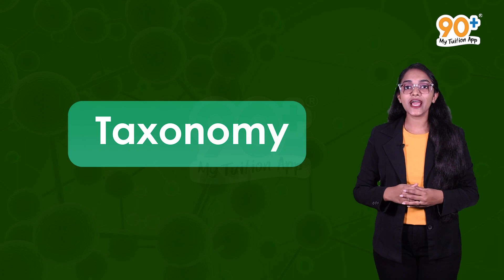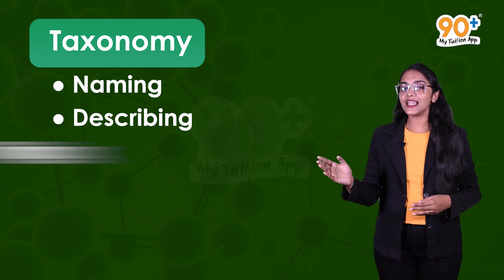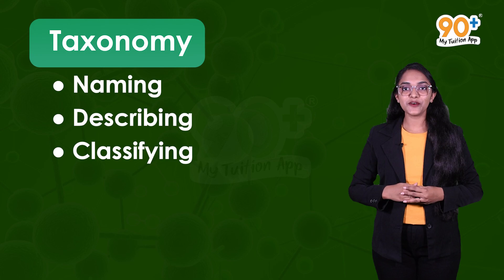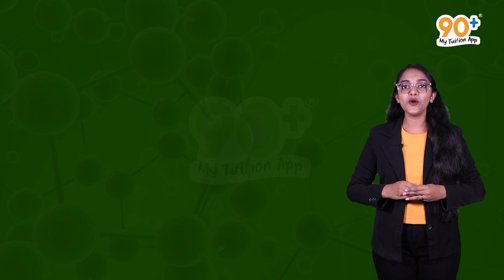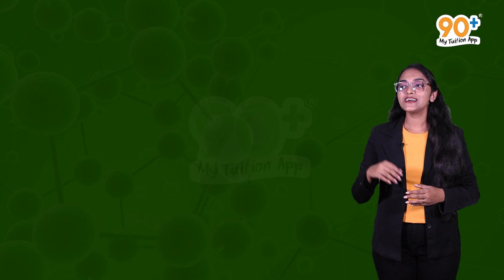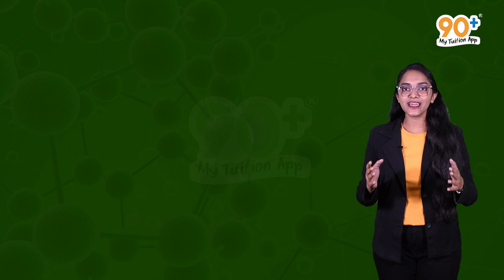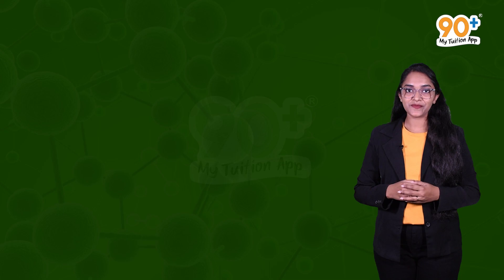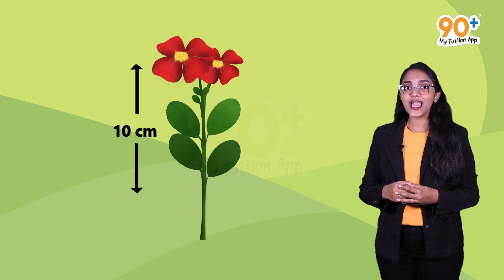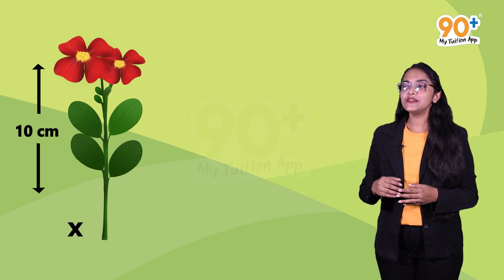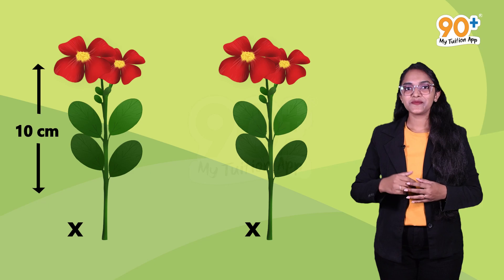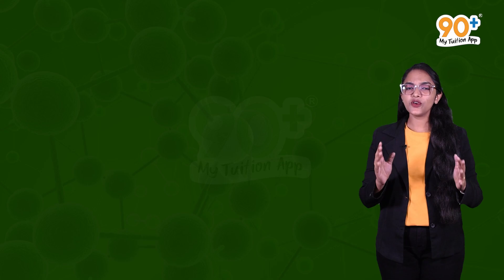The solution is taxonomy. Taxonomy is the branch of biology that deals with naming, describing, and classifying organisms. The names of organisms should be standardized so that every organism in the world is known by the same name — this process is called nomenclature. Identification is another stage in the naming process, because the characters of the organism need to be correctly identified so we know which name is attached to which organism.